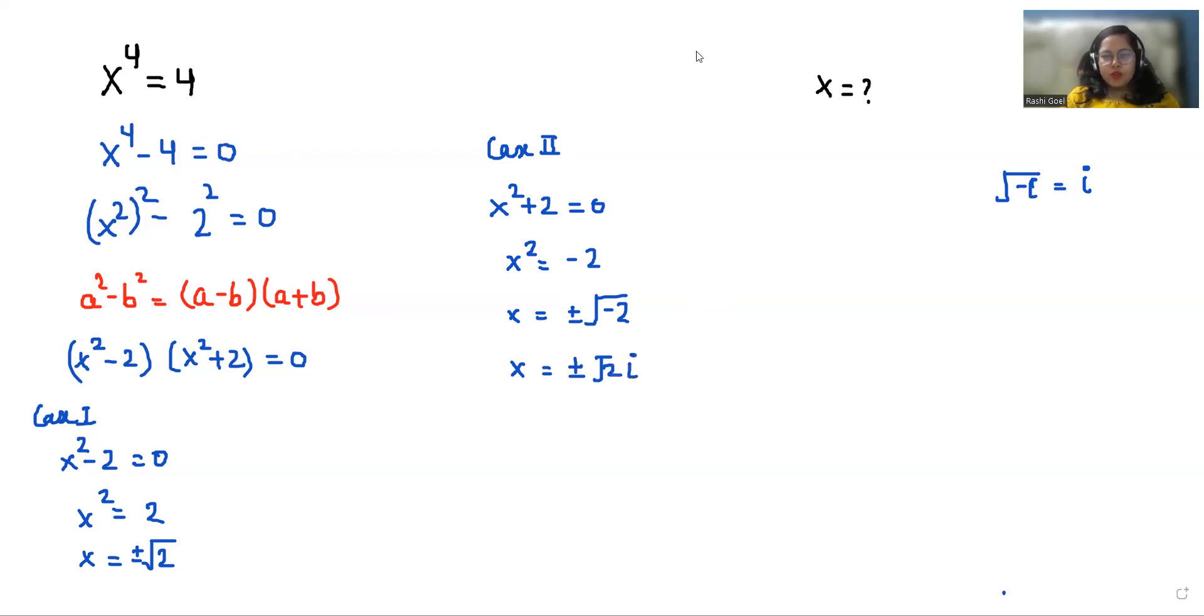So we have four values of x. x₁ = √2, x₂ = -√2, x₃ = √2i, and x₄ = -√2i.